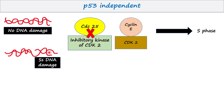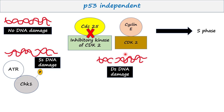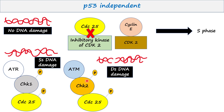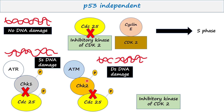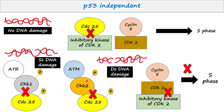If there is a single-stranded break in DNA, ATR protein is activated and it phosphorylates CHK1 protein. If there is a double-stranded break in DNA, ATM protein is activated and it phosphorylates CHK2 protein. Phosphorylated CHK1 and CHK2 proteins act on CDC25 and make it phosphorylated. Phosphorylated CDC25 is degraded. Hence, the inhibitory kinase is not degraded, which leads to the degradation of CDK2, and the cell cycle does not proceed toward S phase.